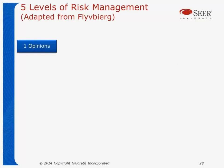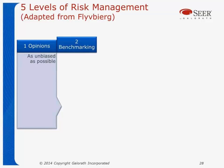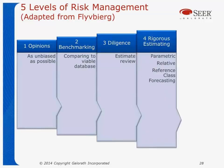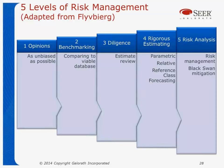There are five levels of risk management as well. Level one: opinions — 'I think it's going to be this.' Better than nothing, but not so good. Level two: benchmarking — comparing to something viable. Level three: actually doing due diligence, digging in, looking at what might be right or wrong and where things might be off. Level four: using serious and rigorous estimating — reference class forecasting, parametric modeling, estimates by comparison. Level five: full risk management and looking for black swan mitigation. Black swans are the things that go wrong that people would never have thought would go wrong. These are five levels of risk management that should be applied to estimating.